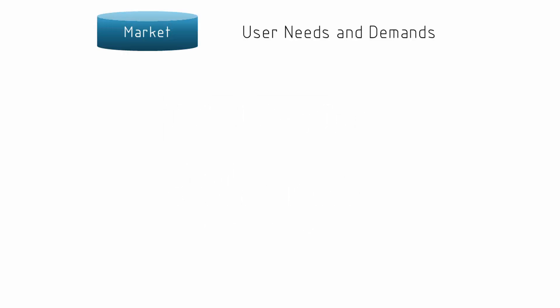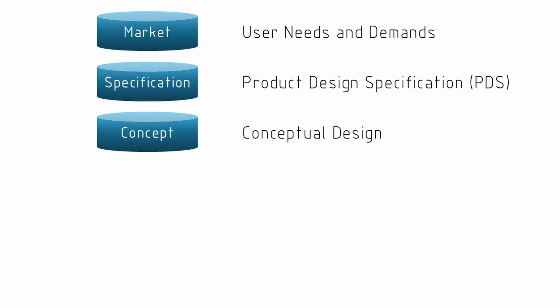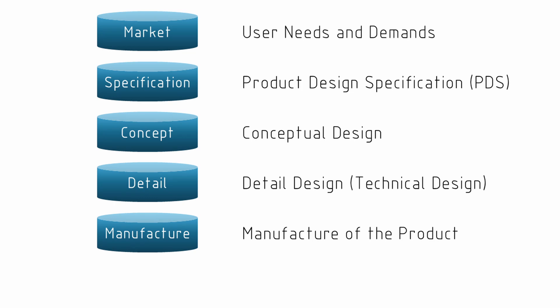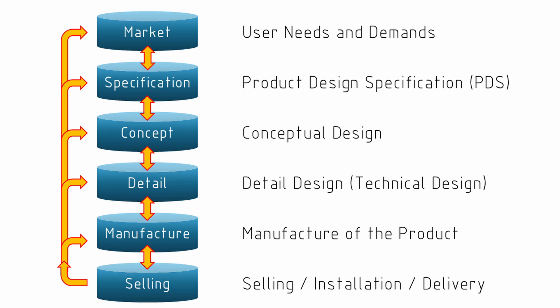The first stage is the market, addressing user needs and demands. The second is the product design specification. The third is conceptual design. The fourth is detailed design. The fifth is manufacture. And the sixth is selling or installation. While these stages are listed sequentially, the process has inherent iteration — issues in later stages will require revisiting earlier stages, and some work will be conducted in parallel.